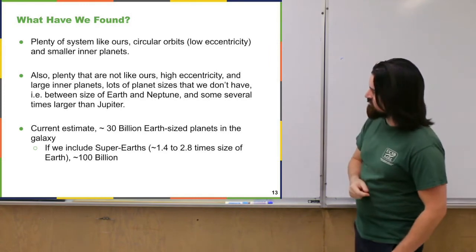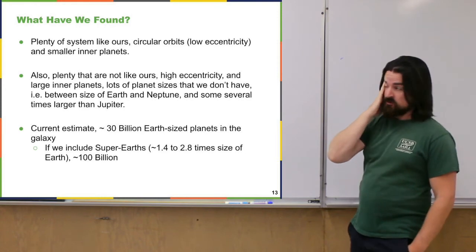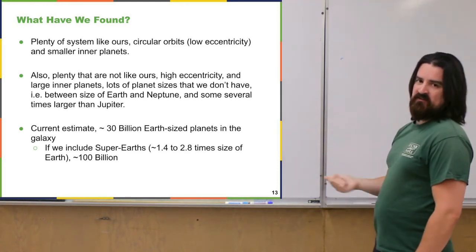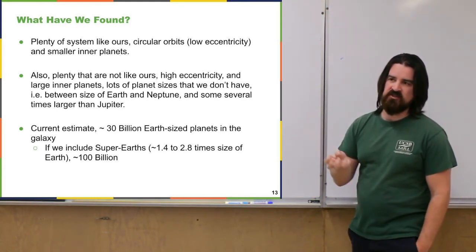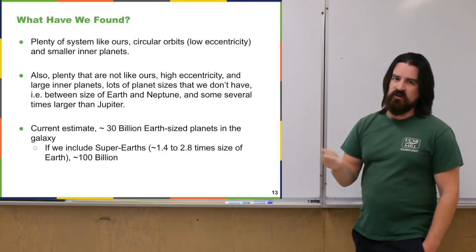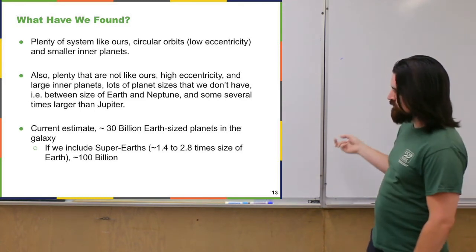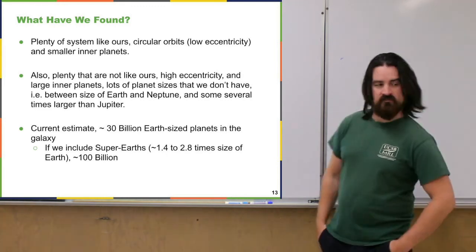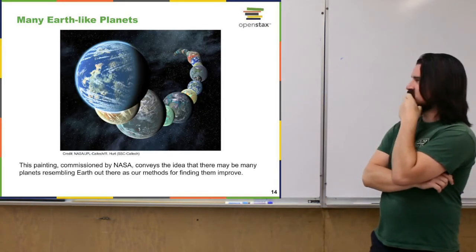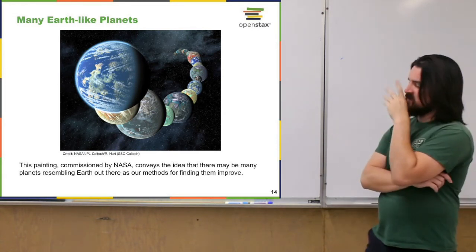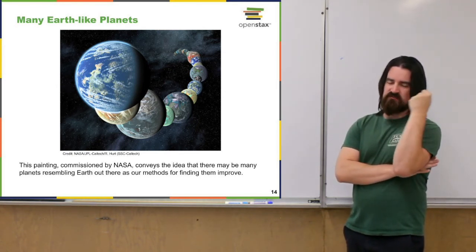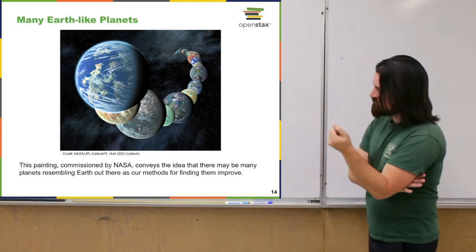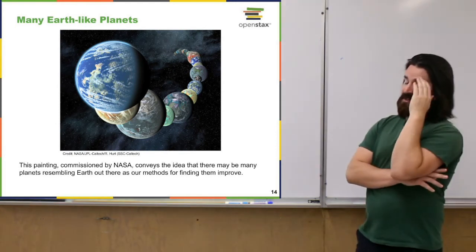With current observations we estimate there are something like 30 billion Earth-sized planets in our galaxy. That doesn't speak to whether they're in habitable zones or have atmospheres, but just based on planet sizes observed and the distribution of sizes and amounts of planets that form around stars on average — 30 billion. If you include the super-Earth category of 1.4 to 2.8 times Earth's size, we think there are about 100 billion of those in our galaxy alone.